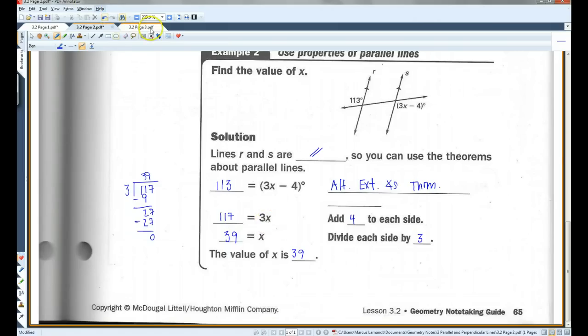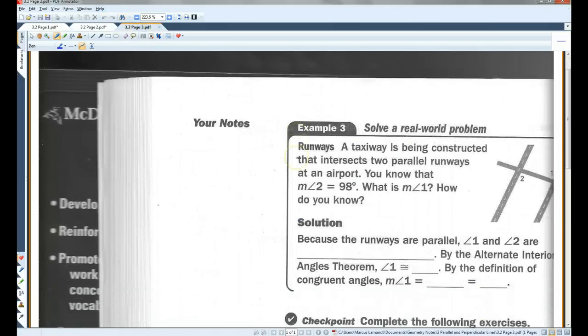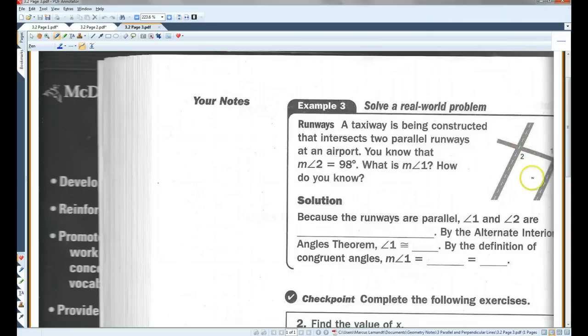All right, last page. Sorry, this got cut off. But it should be fine in your notes. Runways. A taxiway is being constructed that intersects two parallel runways. All right, so they tell us that these two runways are parallel.